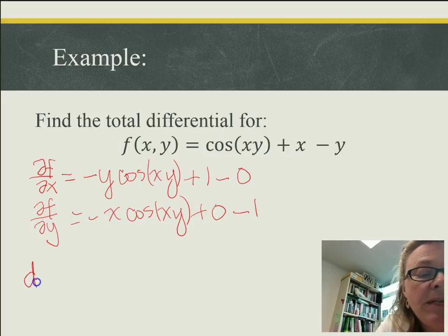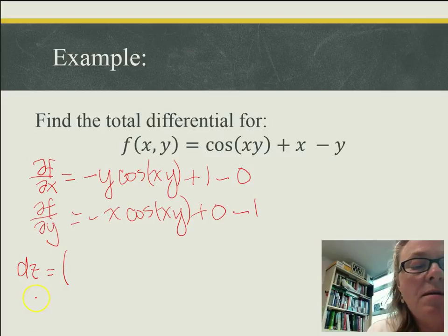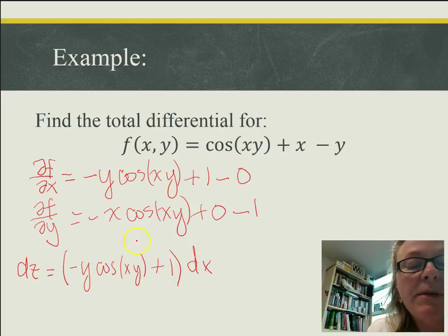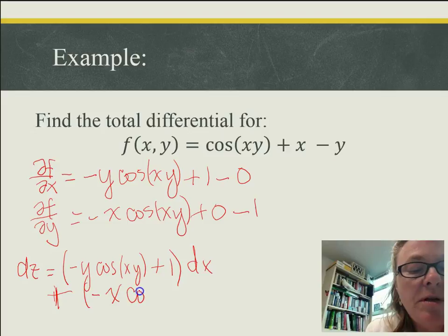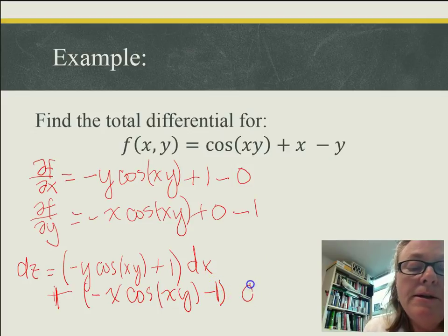So my total differential is going to be dz. My partial of f with respect to x, so negative y cosine of xy plus 1, differential x, because that's the partial derivative with respect to x. Plus negative x cosine of xy minus 1 dy. So this would be our total differential for this particular function. And we're going to explore how we would actually be using this in approximations and error analysis.